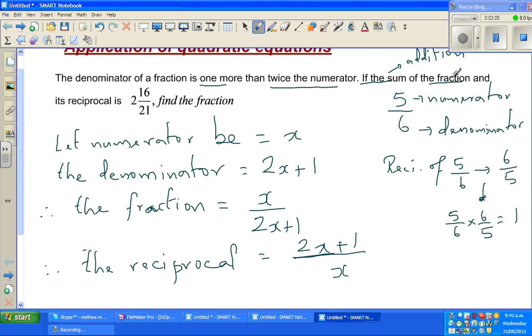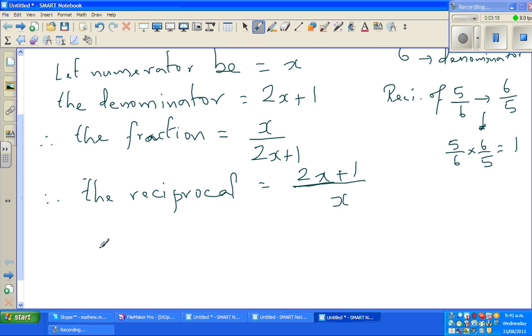Therefore the reciprocal of this would be 2x plus 1 over x. Now the sum of the fraction and the reciprocal would be 2 whole 16 over 21. So what they are saying is this plus this is this mixed number, or it's also called a vulgar fraction. So this is where your math or algebra starts. So x over 2x plus 1 plus 2x plus 1 over x is equal to 2 whole 16 over 21.